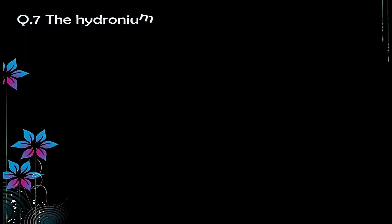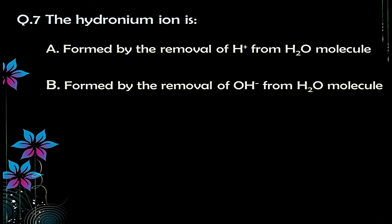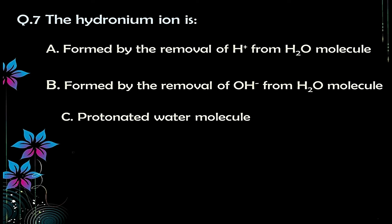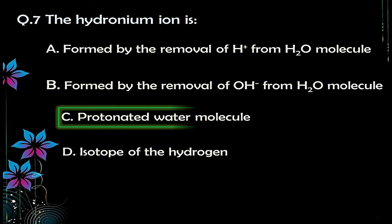Question number seven: the hydronium ion is — options: A) formed by removal of a hydrogen ion from an H₂O molecule, B) [not stated], C) a protonated water molecule, D) an isotope of hydrogen. The correct answer is option C — a protonated water molecule.